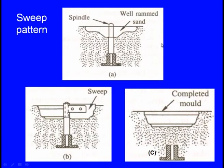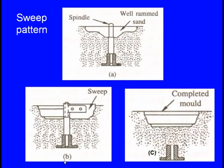The benefit of the sweep pattern is that it is two-dimensional, so material cost is drastically reduced and making the mold cavity is easier. The unrammed loam sand is placed in the box with a spindle. In the second stage, the sweep pattern is attached. As we keep rotating it, the loam sand is removed progressively. Finally, a cavity is created. After the cavity is complete, we remove the pattern and the spindle — this is the complete mold cavity, ready for pouring molten metal.